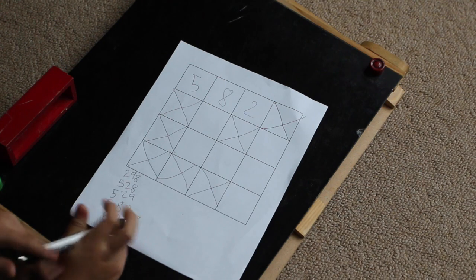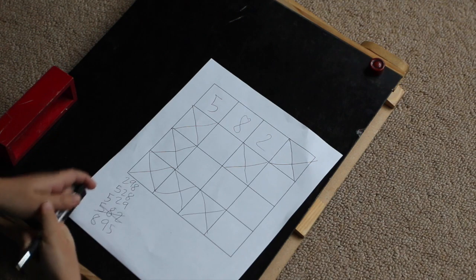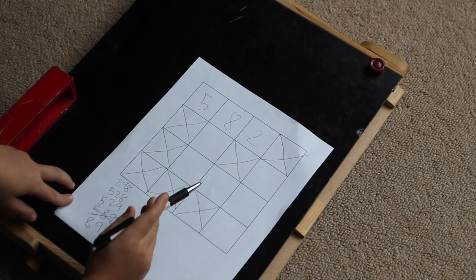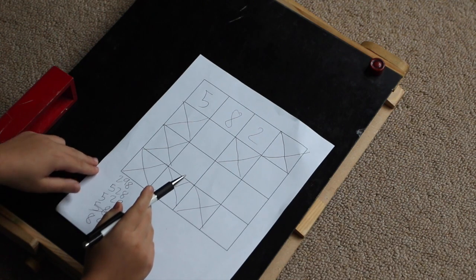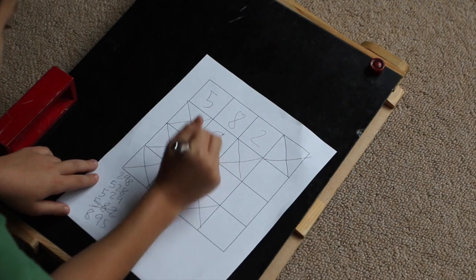Since we've already used that number, let's cross it out. Okay. 895 is the only number that starts with an 8. So it's 895.